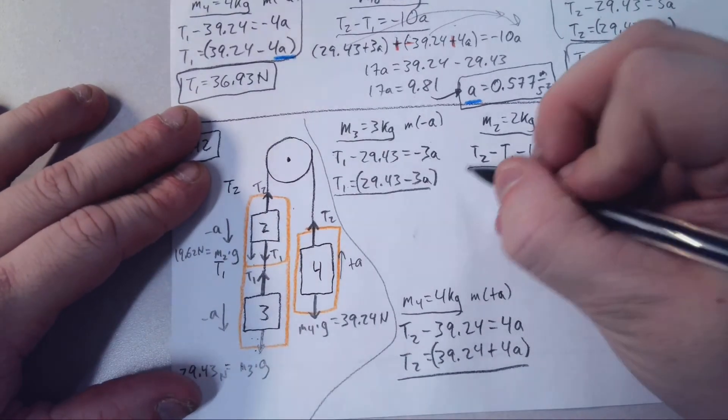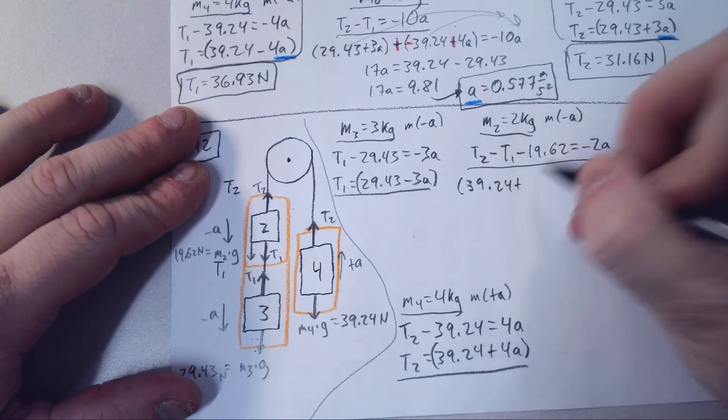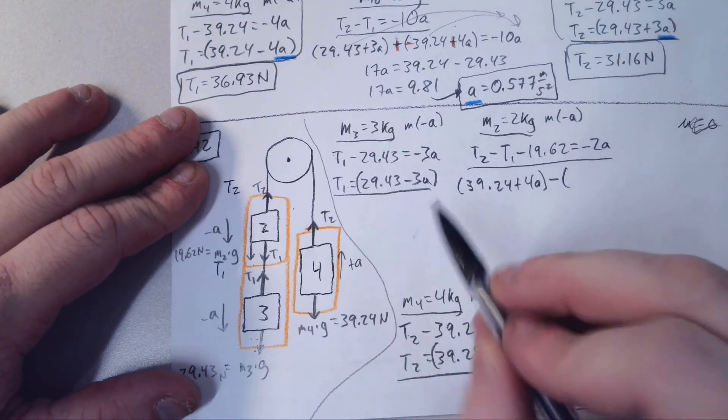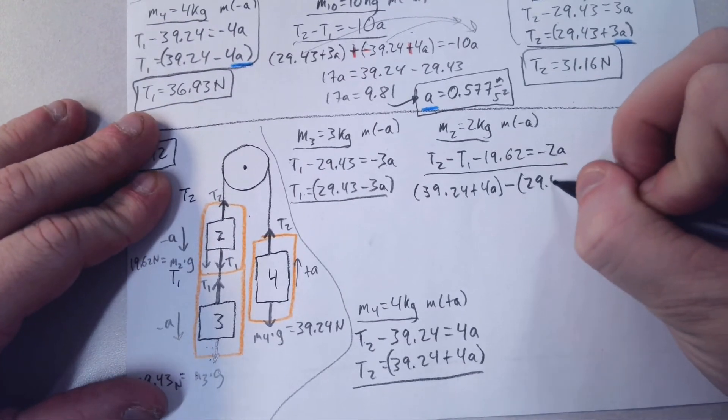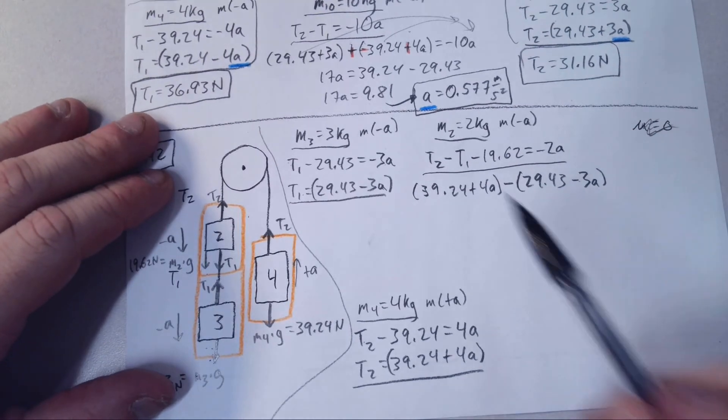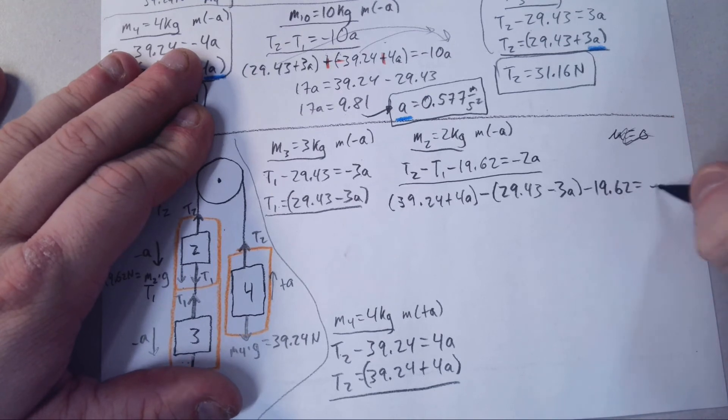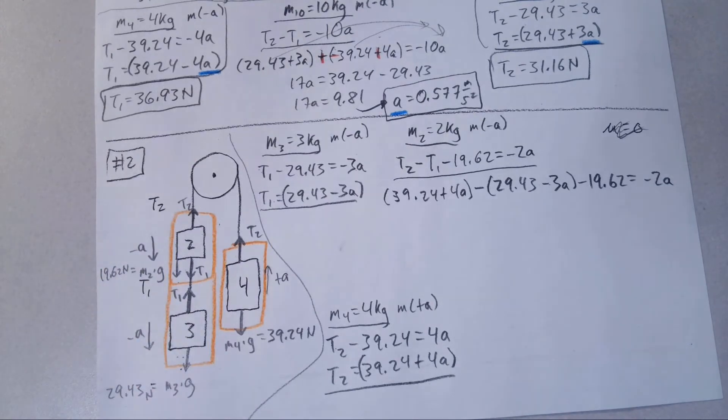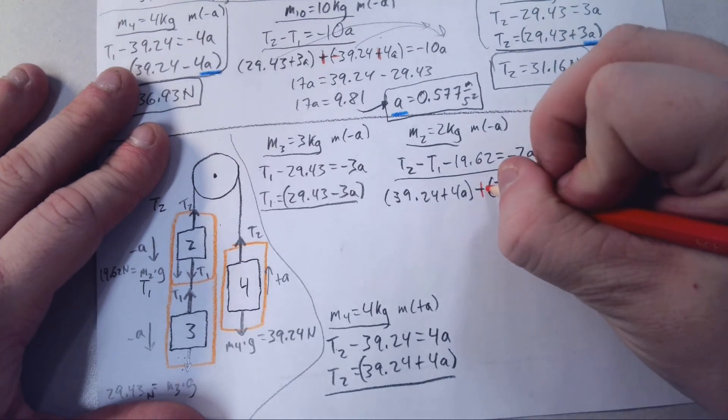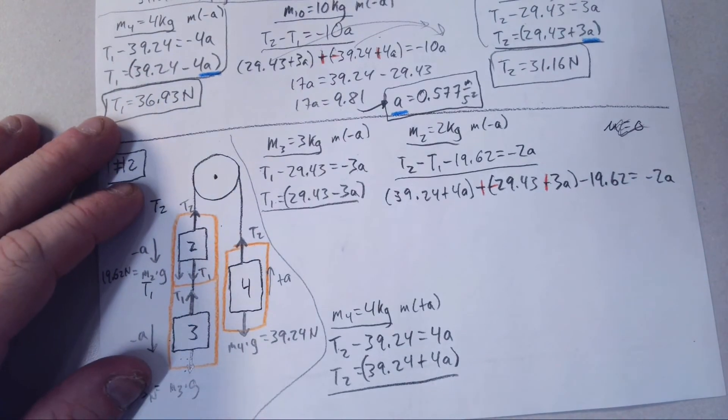We'll plug in T2 first. 39.24 plus 4A. That's that T2. Minus the quantity T1, 29.43 minus 3A. Don't want to forget, we still have this 19.62. So minus 19.62 equals negative 2A. We want to distribute this negative. That positive makes that negative, and that makes that positive.